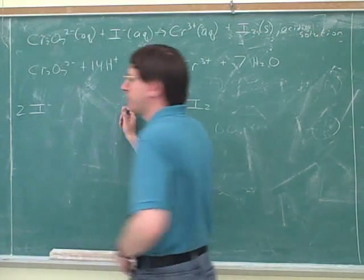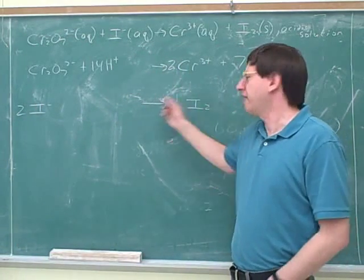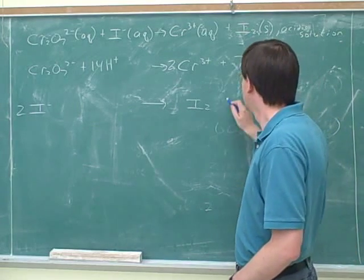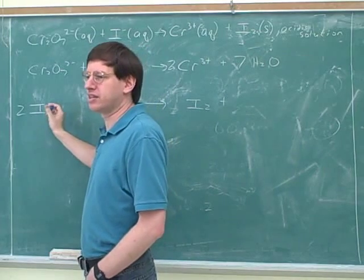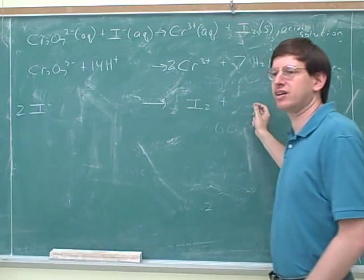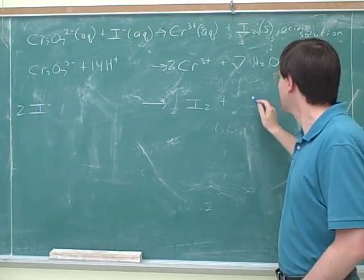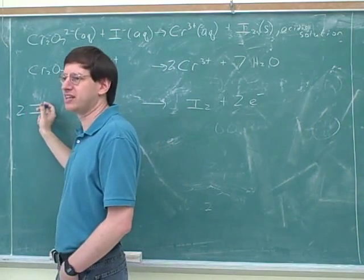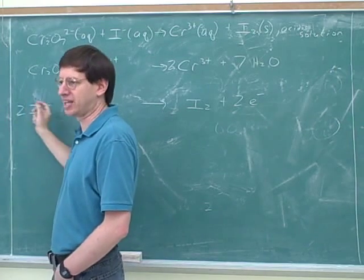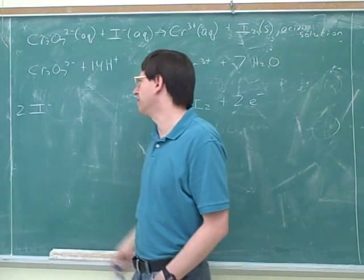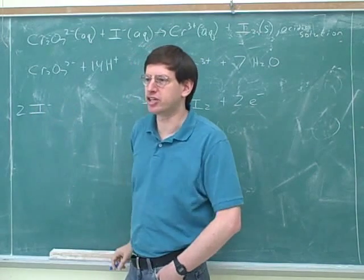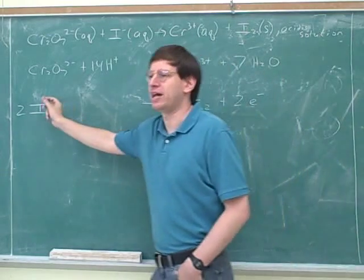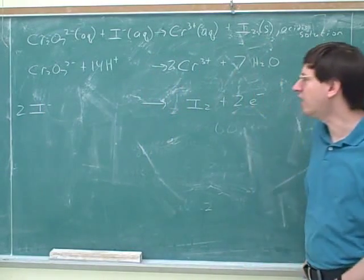For example, let's start with a simpler case down here. How can we balance the charge down here? Add an electron over there. Right now, this has a negative charge. How many electrons do I need over here? Two. Because this has a negative two charge. Each iodide has a negative charge, but there's two of them. That gives it a negative two charge overall. That's why we had to balance the iodines first before we could balance the charges, because until we did that, we didn't know how many charges there were. So we need two electrons here to balance this.